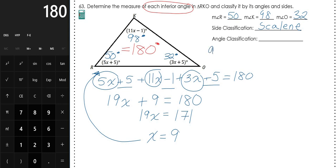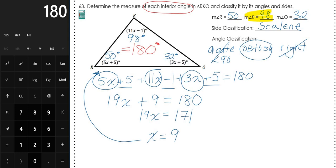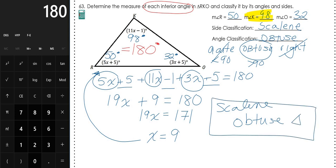For the angle classification, we're looking at acute, obtuse, or right. For a right triangle, you'd need a 90-degree angle — we don't have one. For acute, all three angles would have to be less than 90 — but we have a 98-degree angle, which is larger than 90. So it's not acute. Instead, it's obtuse because of that 98-degree angle — an obtuse angle is anything larger than 90 but less than 180. So this is a scalene obtuse triangle.